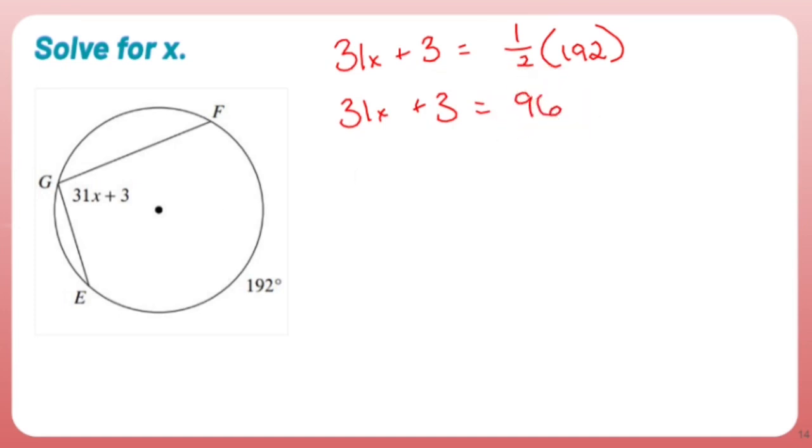Now I have a two-step equation. Minus 3, minus 3, cross you out. 31x equals 93. Divide both sides by 31. And x equals 3.